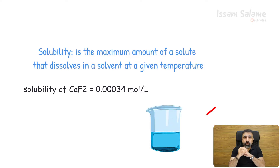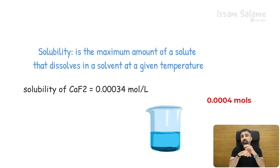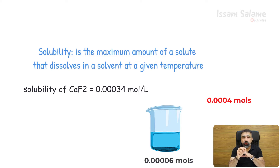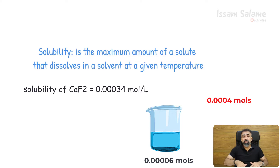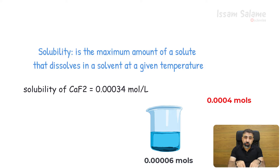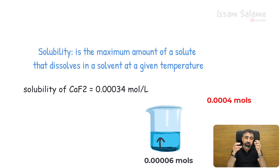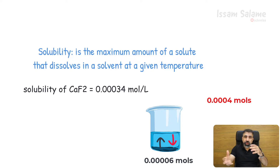This means that if we add 0.0004 mols of calcium fluoride to 1 liter of water at 25 degrees Celsius, not all of them will dissolve. A certain amount — 0.0006 mols — will settle down and precipitate at the bottom of the beaker. This is a case of chemical equilibrium, where solid calcium fluoride at the bottom dissociates to form calcium ions and fluoride ions, and those dissolved ions recombine to form solid calcium fluoride.